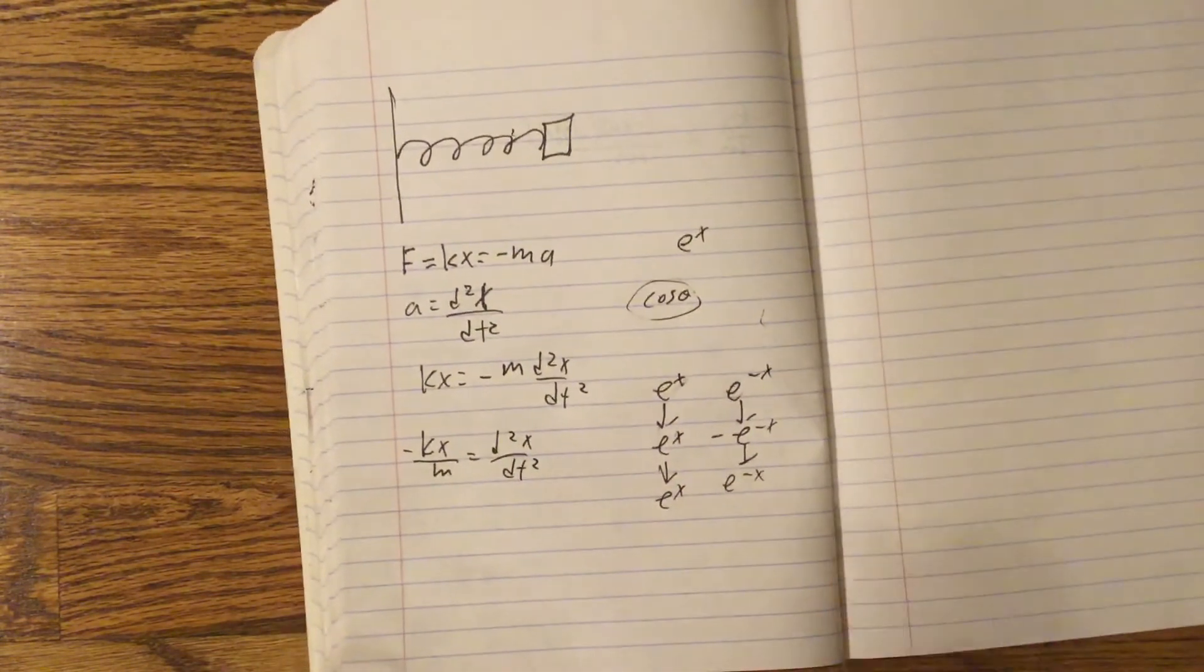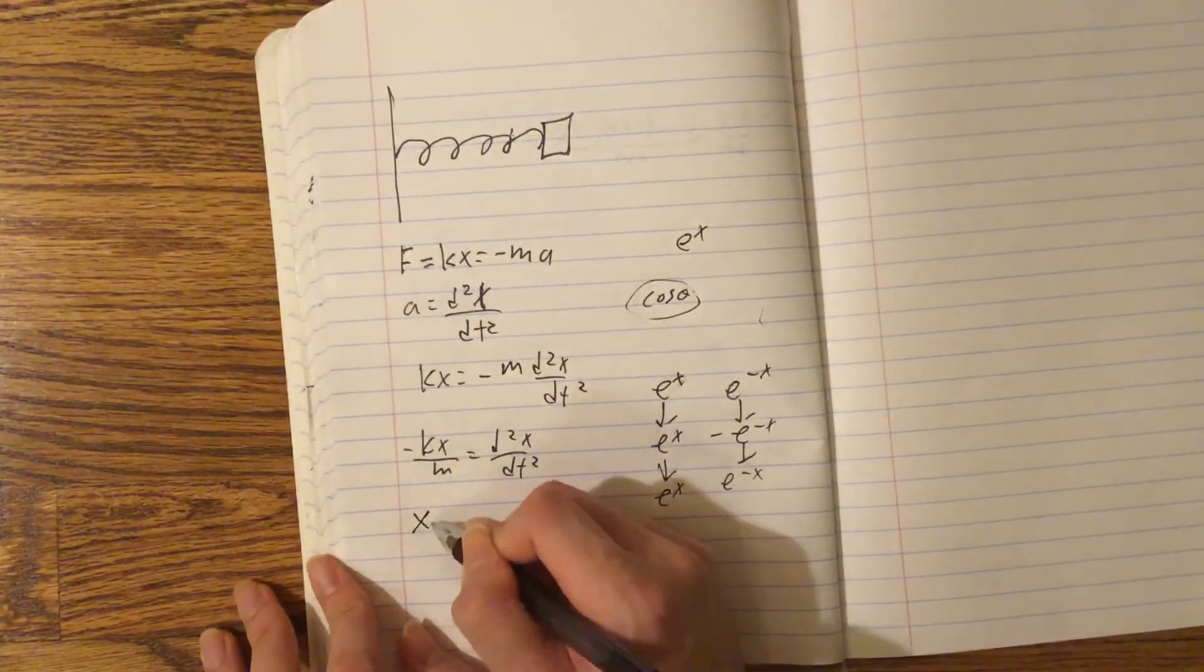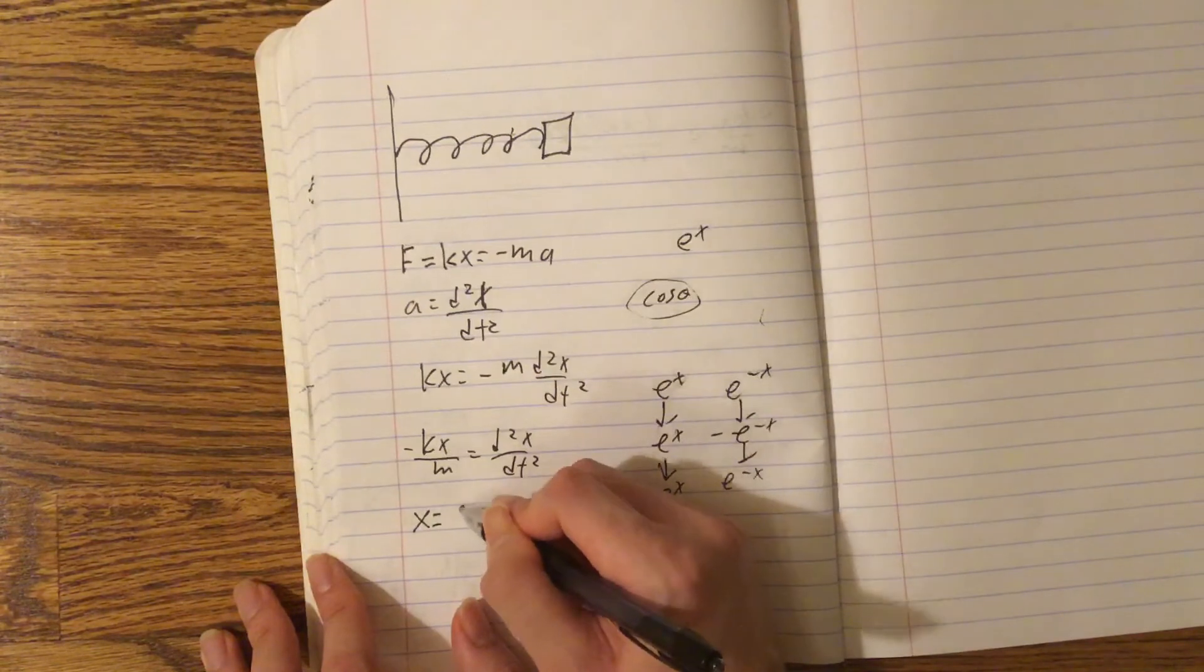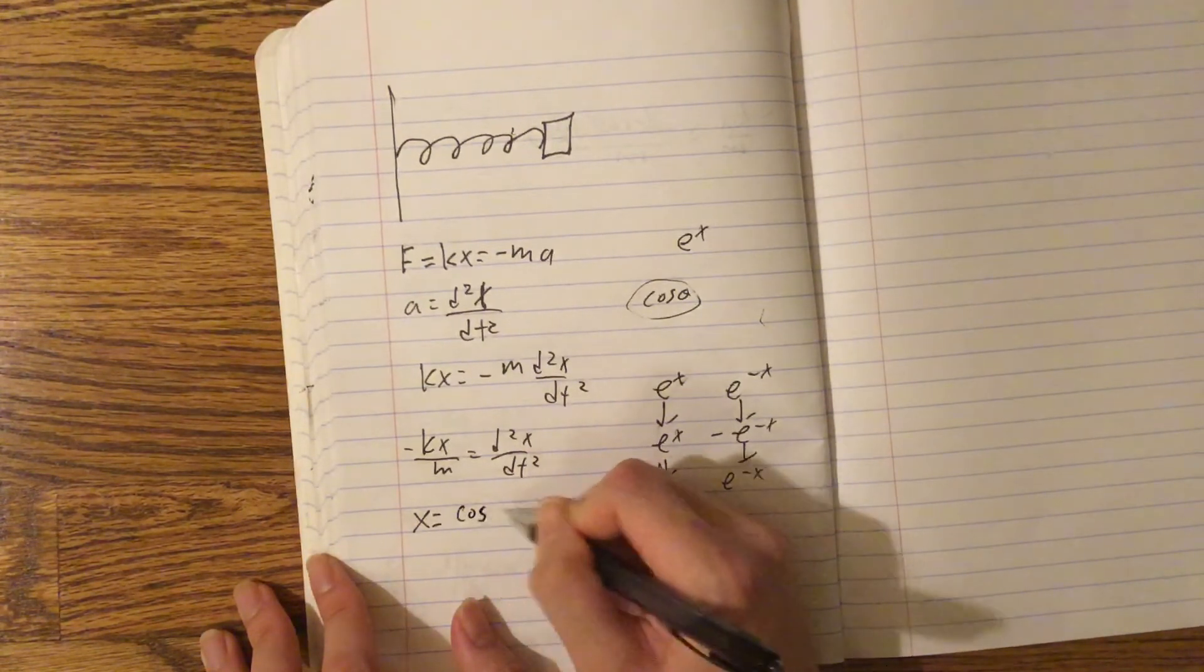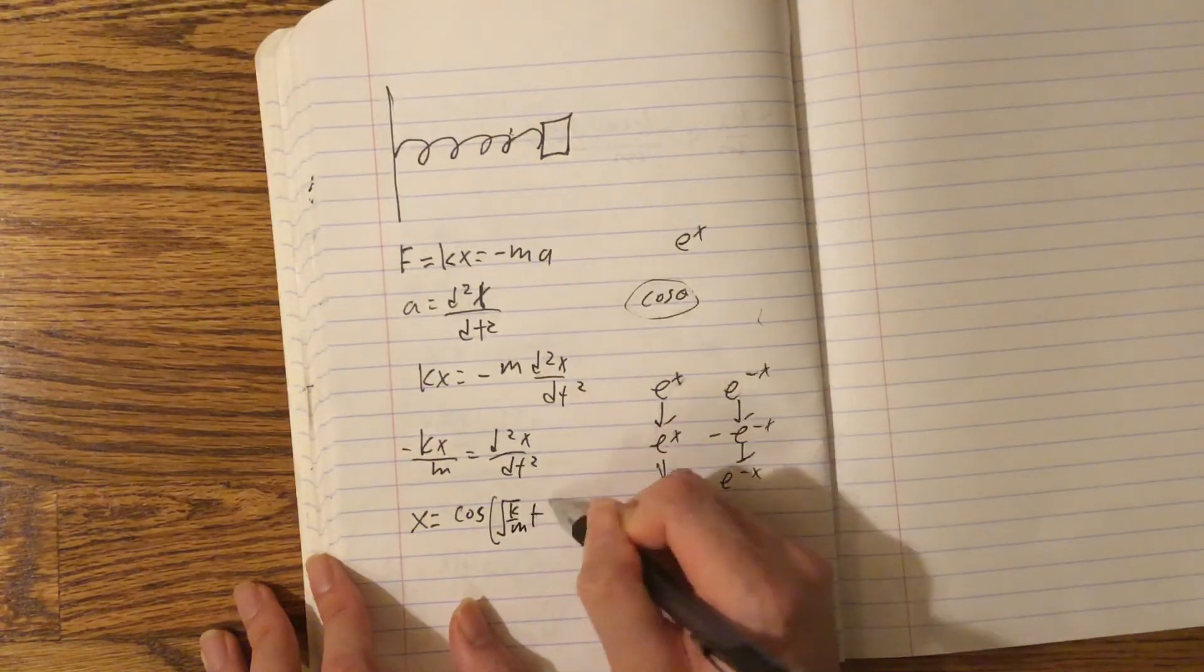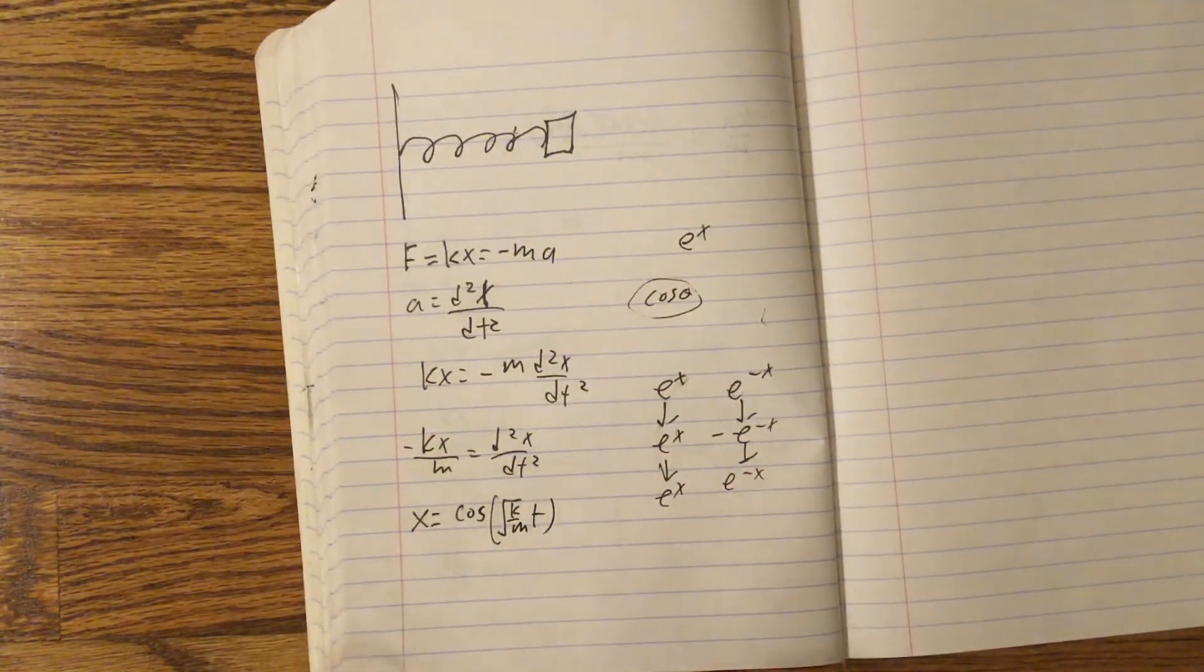Now, I'm just going to tell you what x equals now, and then I'll explain why x must equal this. x equals cos root k over m times t. And here I'll show you why.